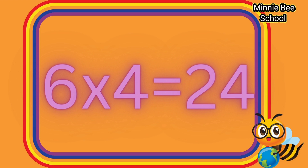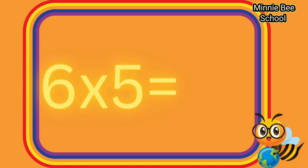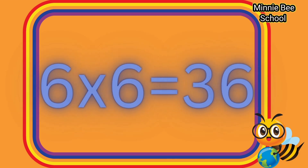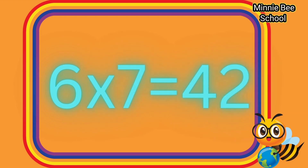Six times four is twenty-four. Six times five is thirty. Six times six is thirty-six. Six times seven is forty-two.